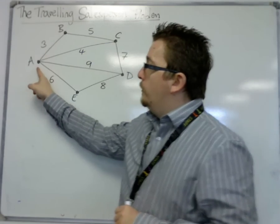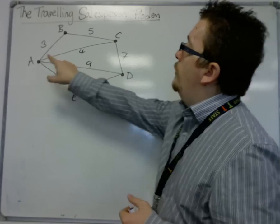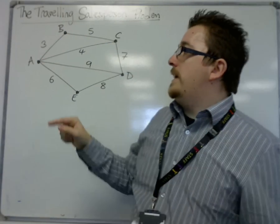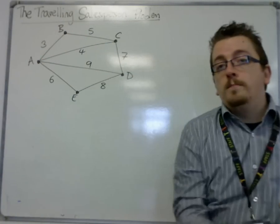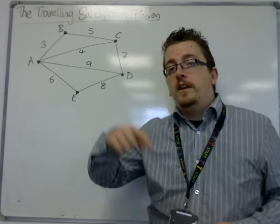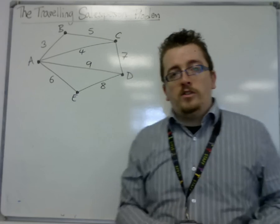So for example, maybe the salesperson is starting at Town A and they've got business to attend to in B, C, D and E, and then they need to get back home, back to A. What is the fastest route that they can go around to visit all of the vertices and get back to where you started?